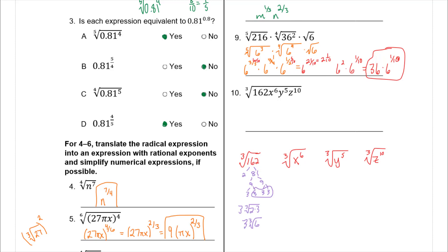For variables, it's easier to think with rational exponents. X to the 6/3 is just x squared. X to the 5/3 doesn't simplify cleanly, but as a mixed number it's 1 and 2/3, meaning one x comes out and x squared stays inside. For y to the fifth: break it into y cubed and y squared — the cube root of y cubed pulls out a y, but y squared can't take the cube root so it stays underneath.